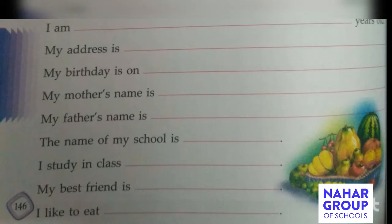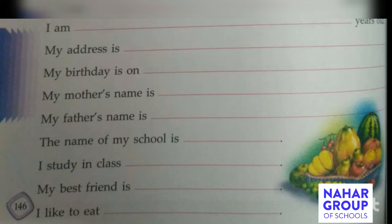Next, 'My address is.' Here you have to write where you live. Suppose you are living in Tatanagar, so you will write: my address is Tatanagar Ratla. Next, 'My birthday is on.' Suppose you were born on 7th of July, so you will write: my birthday is on 7th of July.